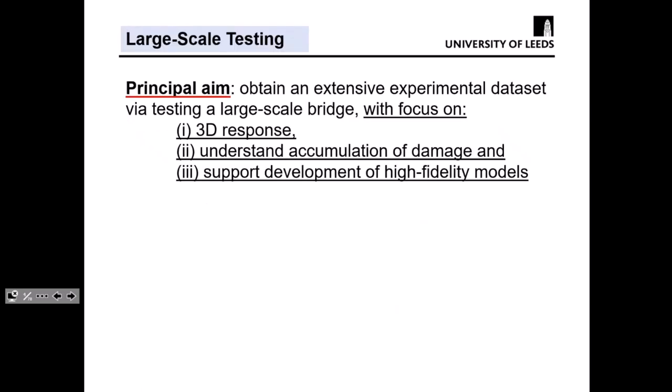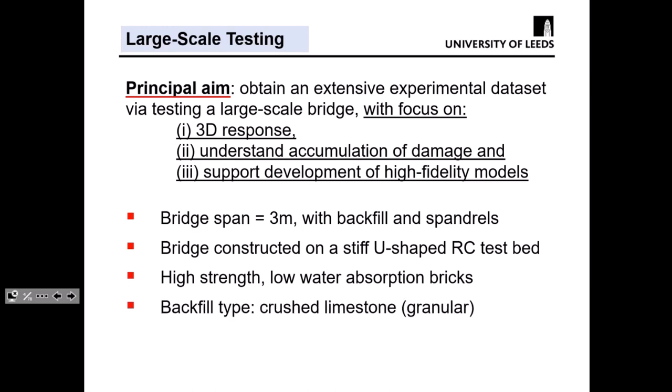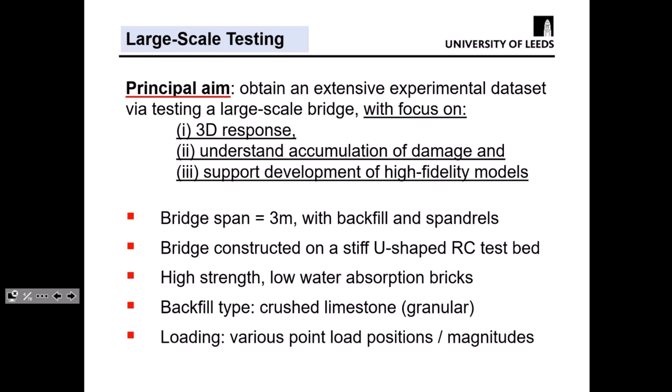The principal aim of this presentation is to give you an indication of the amount of data we got from testing a large-scale bridge. We paid particular attention to understanding the 3D effects, as well as accumulation of damage, and also did this test to support development of high-fidelity models by the Imperial College team. The bridge we constructed in the lab is a 3-metre span. It includes backfill and spandrels, was constructed on a stiff U-shaped reinforced concrete testbed. The bricks used were high-strength, low-water absorption bricks, and the backfill was crushed limestone — granular material. We applied different types of point loads at different locations and magnitudes, which varies from the literature that mainly concentrates on line loads.